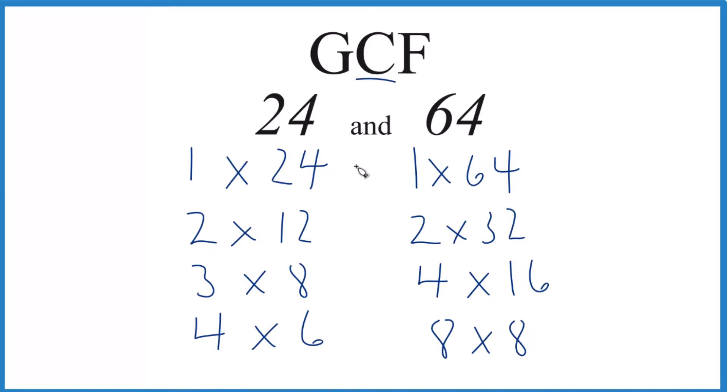Let's see what we have in common. One goes into 24 and 64, 2, 4, but it looks like the greatest number that goes into 24 and 64, the greatest common factor, is going to be 8.